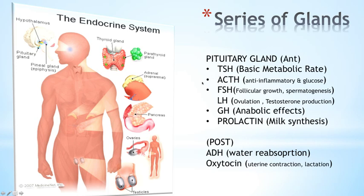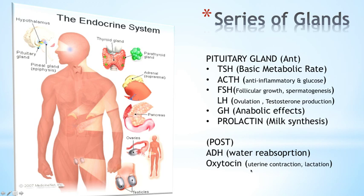FSH (follicle-stimulating hormone) stimulates follicular growth in the ovary and spermatogenesis in males. LH leads to ovulation in females and testosterone production in males. Growth hormone is important for anabolic effects and growth. Prolactin, the last hormone of the anterior pituitary, leads to milk synthesis. In the posterior compartment there are only two hormones: ADH, which is important for water reabsorption in the collecting tubules of the kidneys, and oxytocin, which is important during labor — causing uterine contractions to facilitate labor — and also has a secondary effect with lactation.